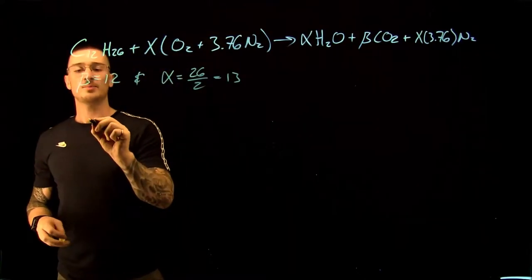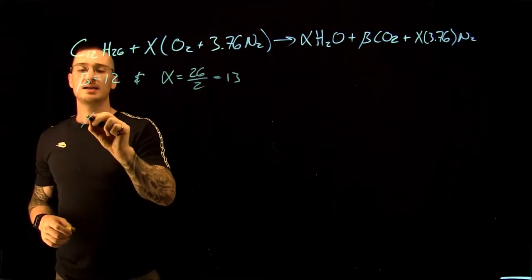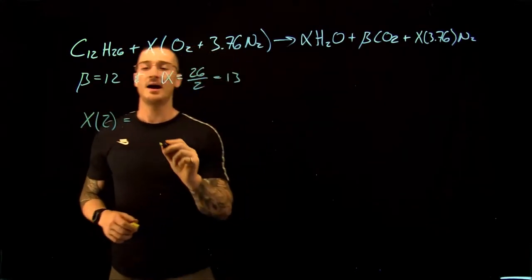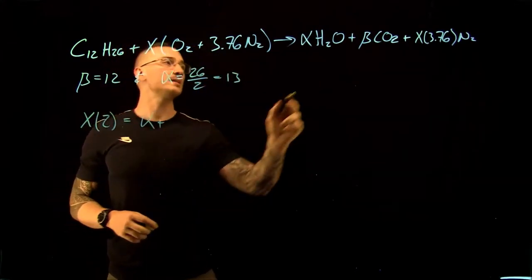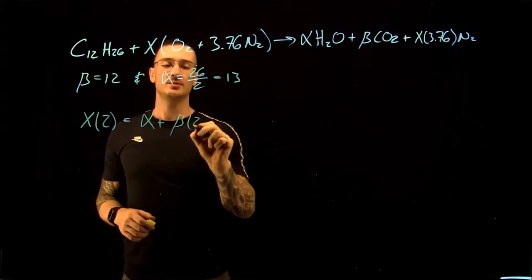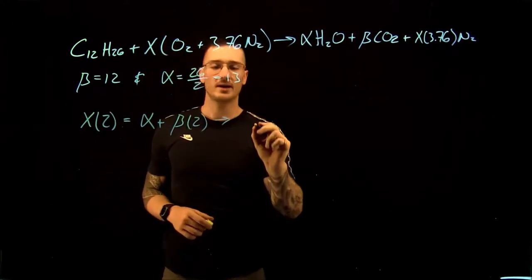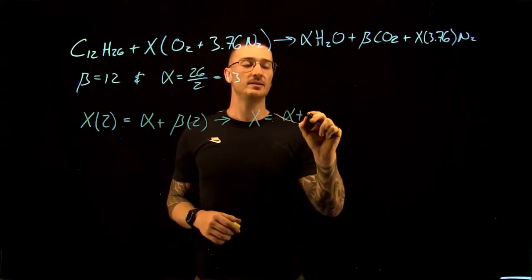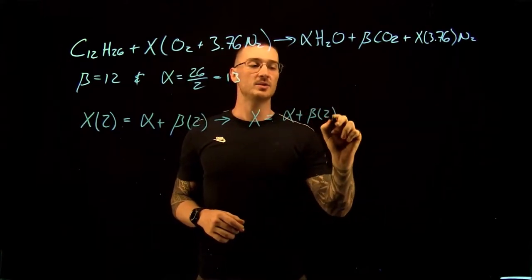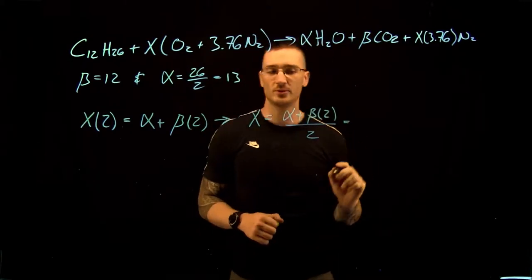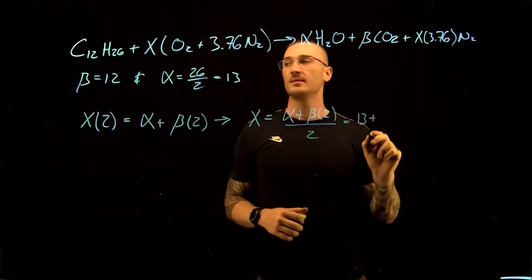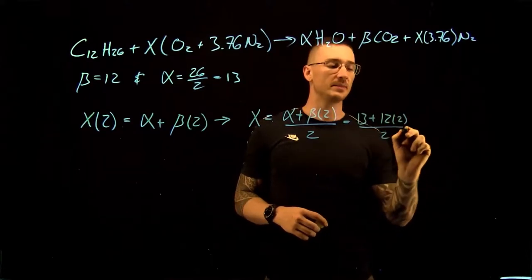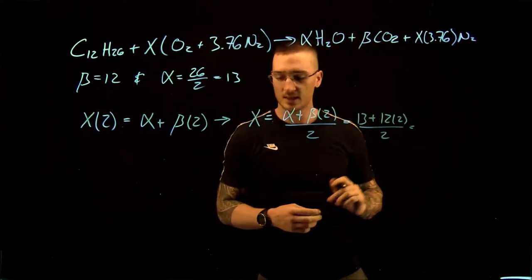We also know that from our products and reactants, X times 2 is going to be equal to alpha plus beta times 2. If we isolate for X, we get that X is equal to alpha plus beta times 2 divided by 2, and this is equal to 13 plus 12 times 2 divided by 2. This gives us 18.5.